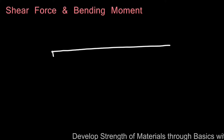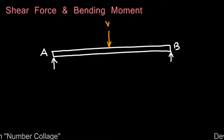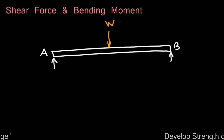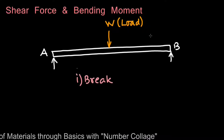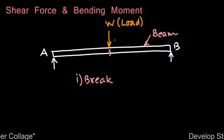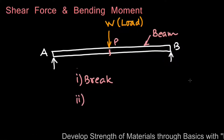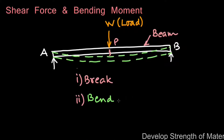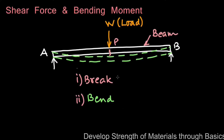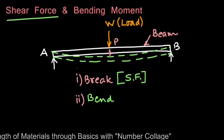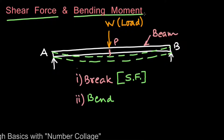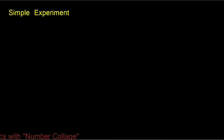In this video we are going to study shear force and bending moment. Consider a simply supported beam AB subjected to a vertical load W in the downward direction. This load W has a tendency to either break the beam at point P if it is sufficiently weak, or to bend the beam if it is sufficiently strong. The breaking is caused by shear force and the bending is caused by bending moment.